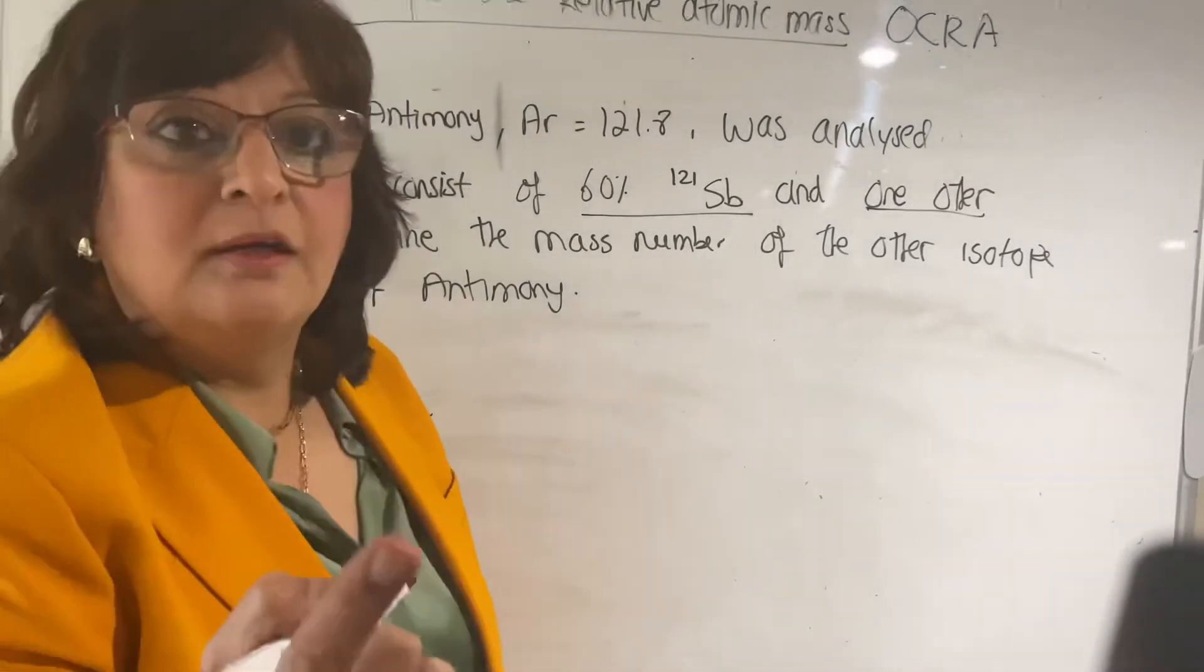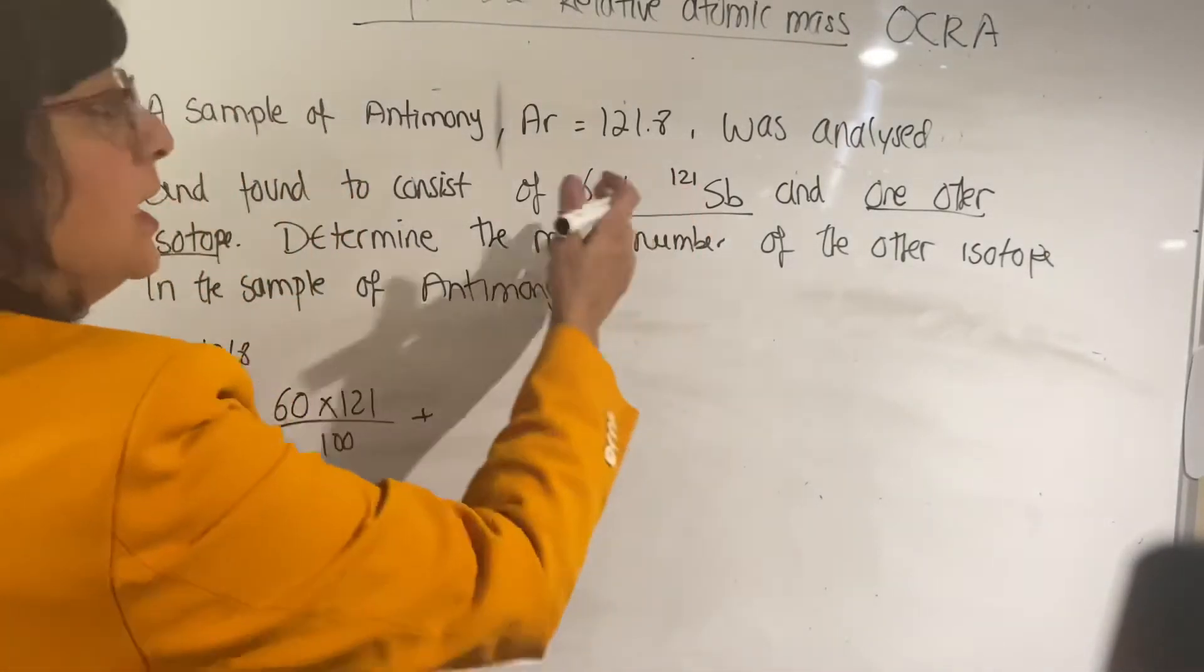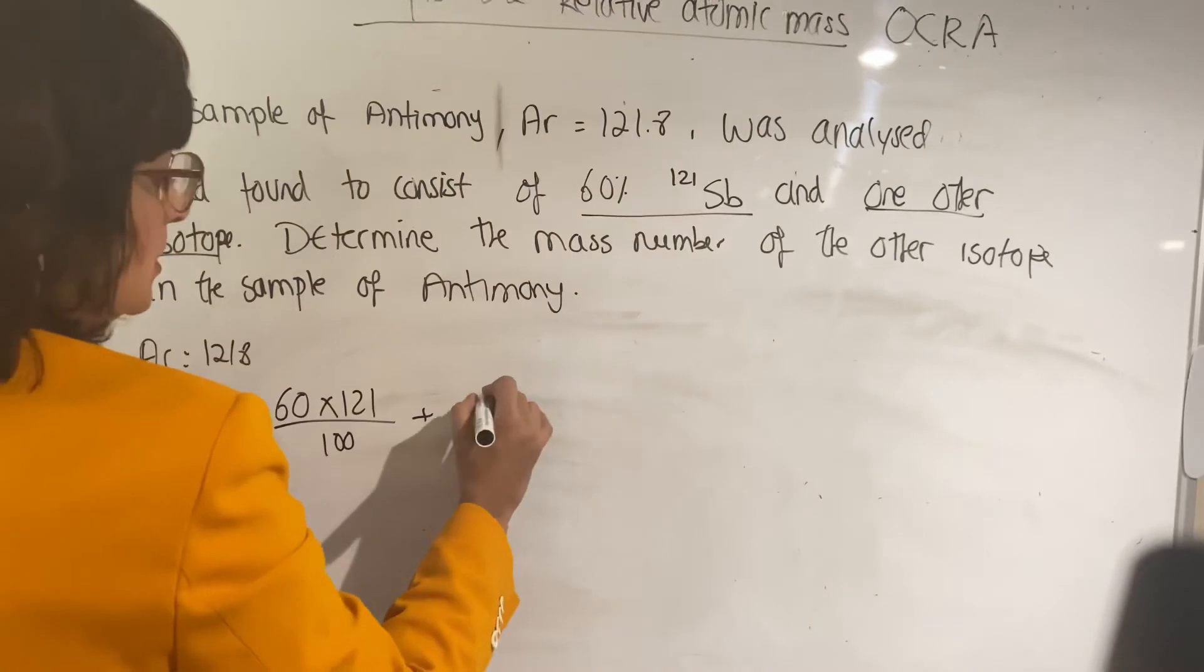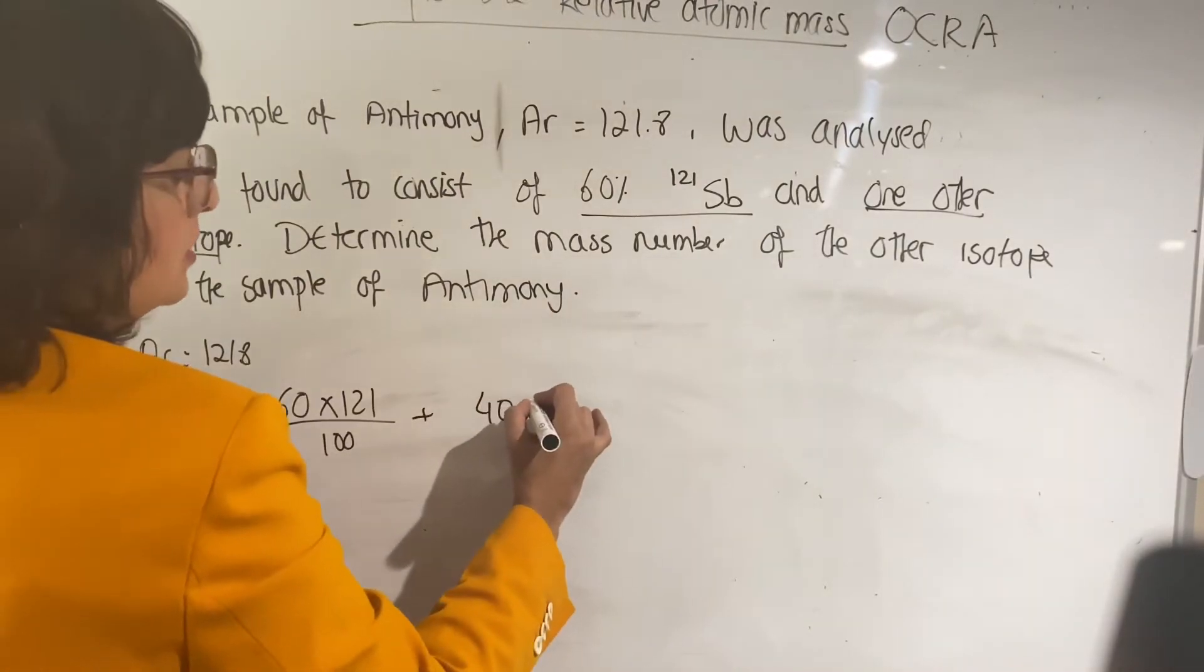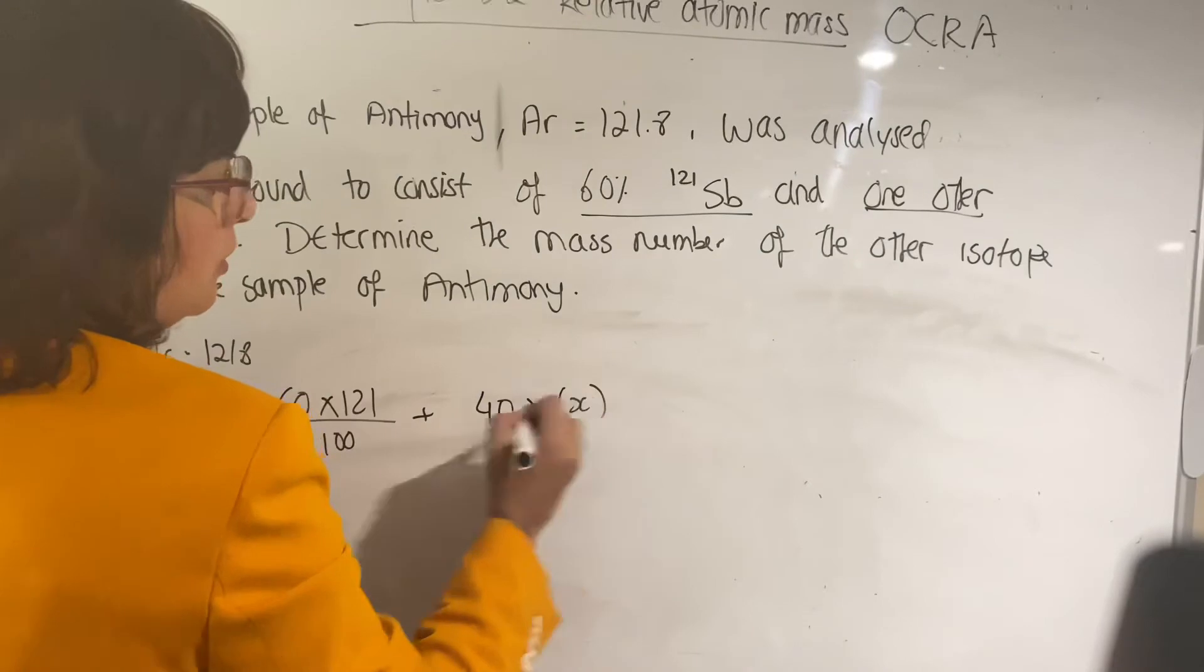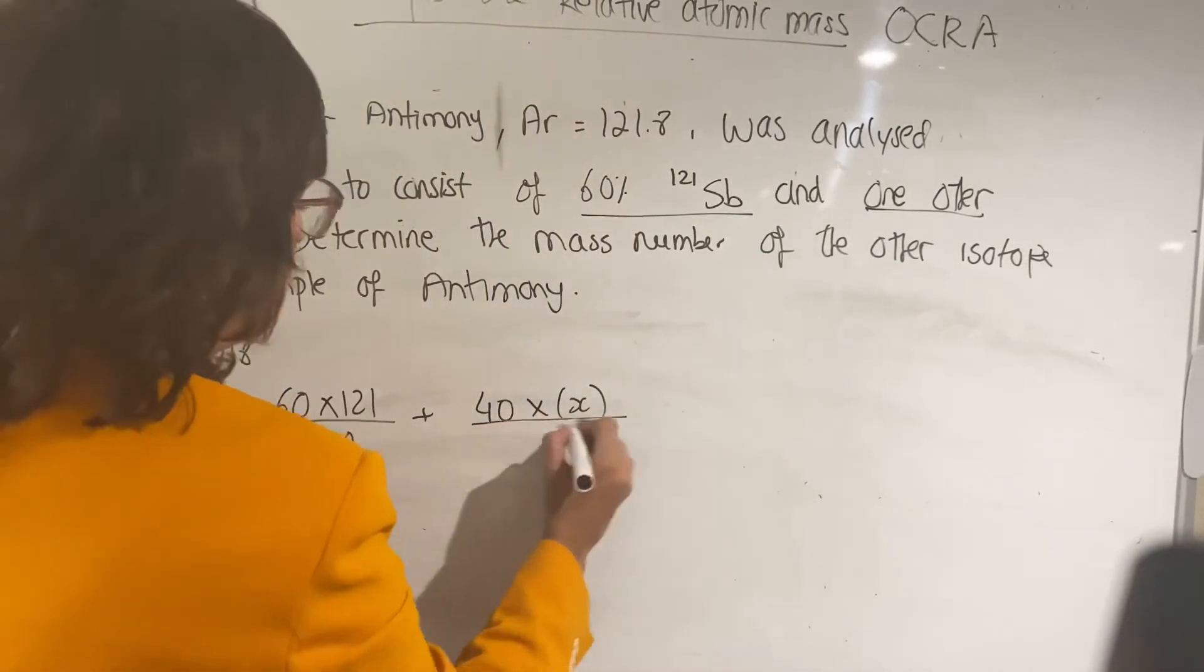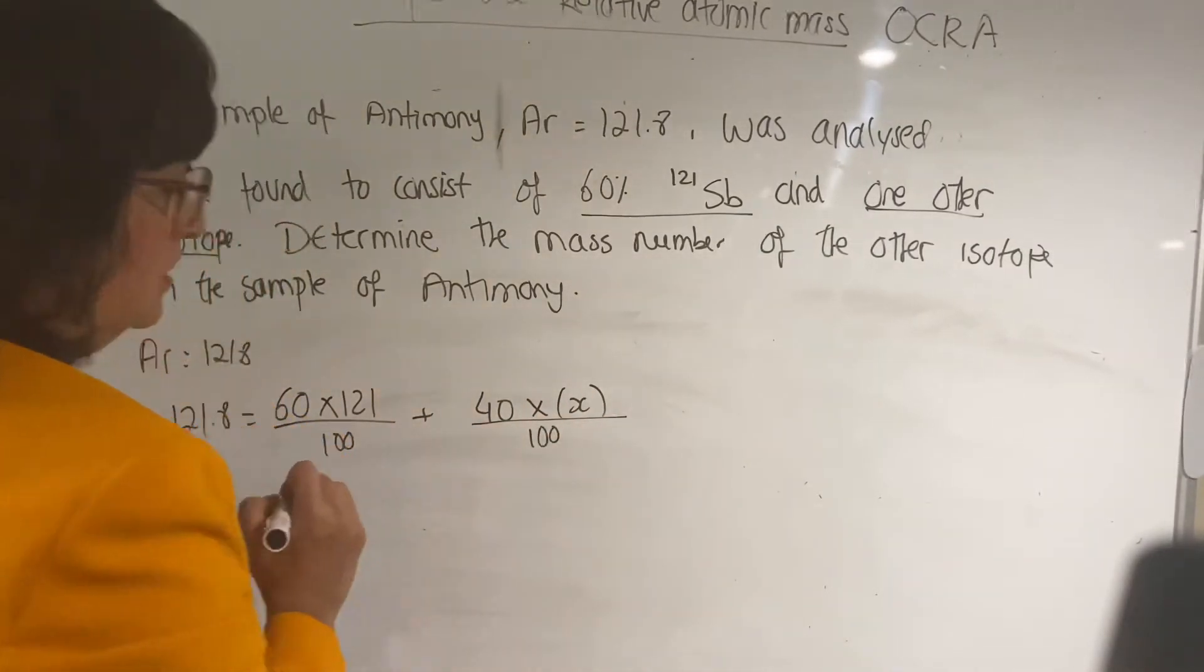Plus if one sample is 60% and you have a full 100%, it'd be 100 minus 60 gives you 40. So it'd be 40% is your other isotope, which you can call it x, so all that divided by 100.